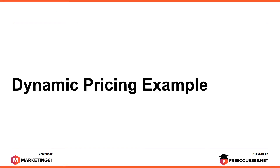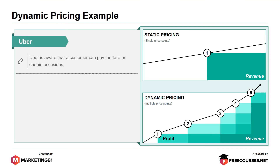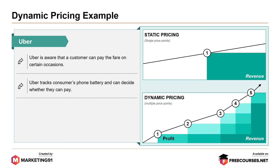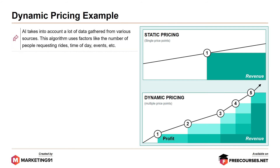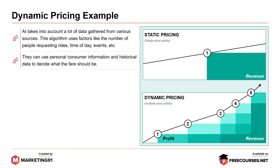Dynamic pricing example: Uber. Uber is aware that a customer can pay the fare on certain occasions. Uber tracks consumers' phone battery and can decide whether they can pay. Artificial intelligence takes into account a lot of data gathered from various sources. This algorithm uses factors like number of people requesting rides, time of day, events, etc. They can use personal consumer information and historical data to decide what the fare should be.